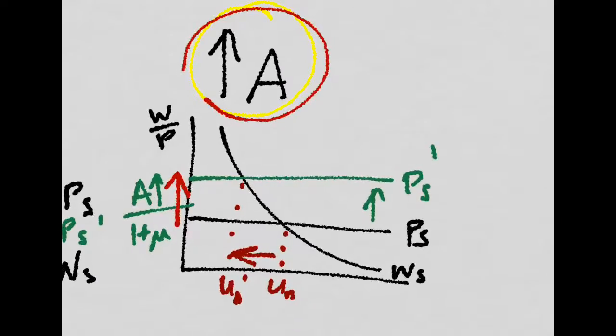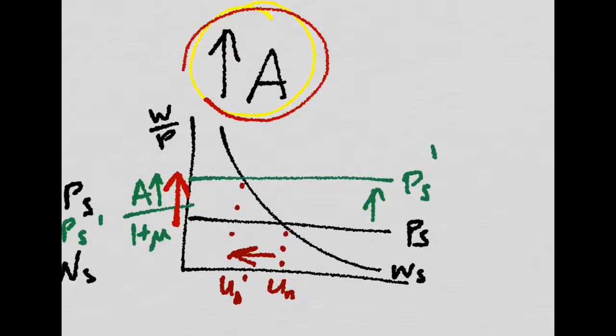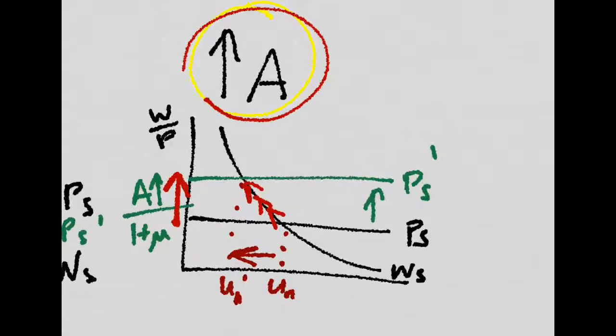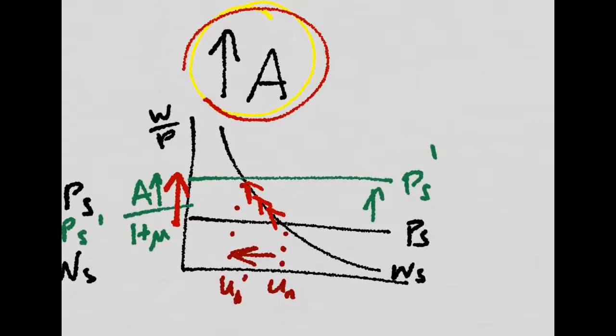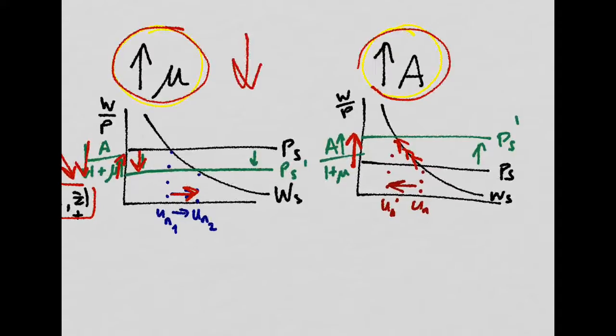When the productivity goes up, the price setting curve goes up. Thus, real wages grow and unemployment decreases. The natural rate of unemployment is lower after an increase in the productivity. So, if firms become more competitive and they set lower markups to be able to compete, then, as in the case of an increase in productivity, the price setting will go up. And in both cases, real wages are higher and the natural unemployment rate of the economy is lower.